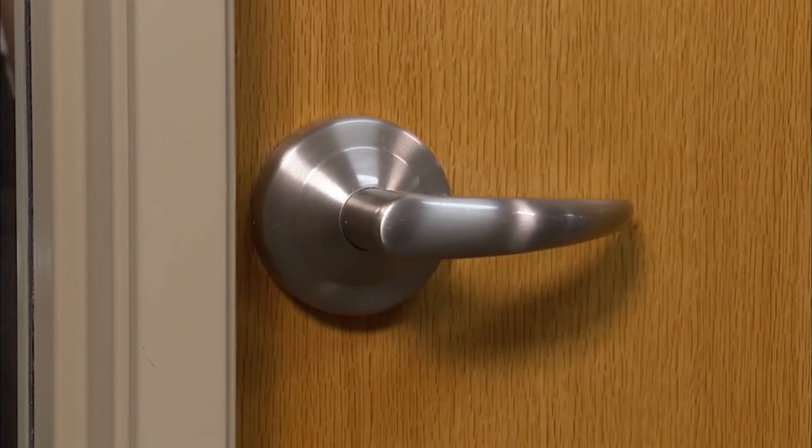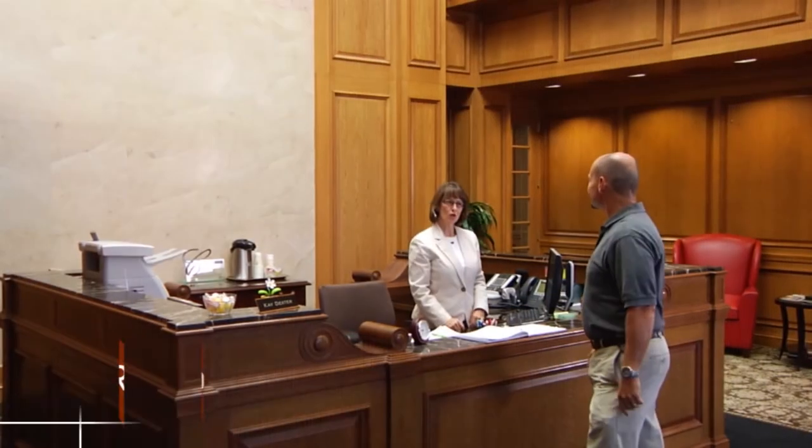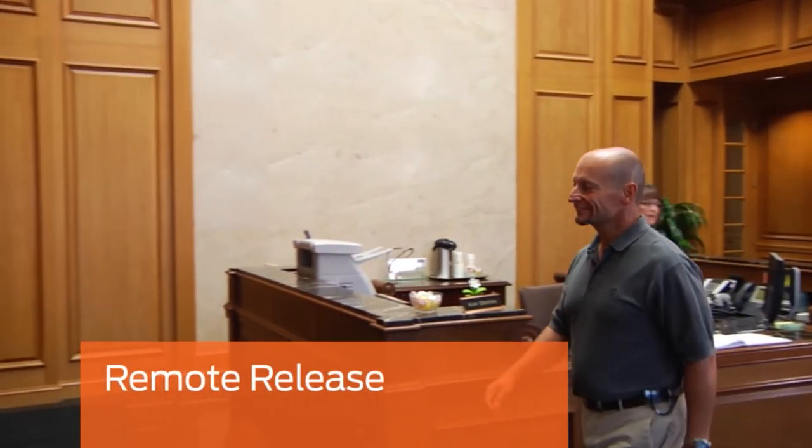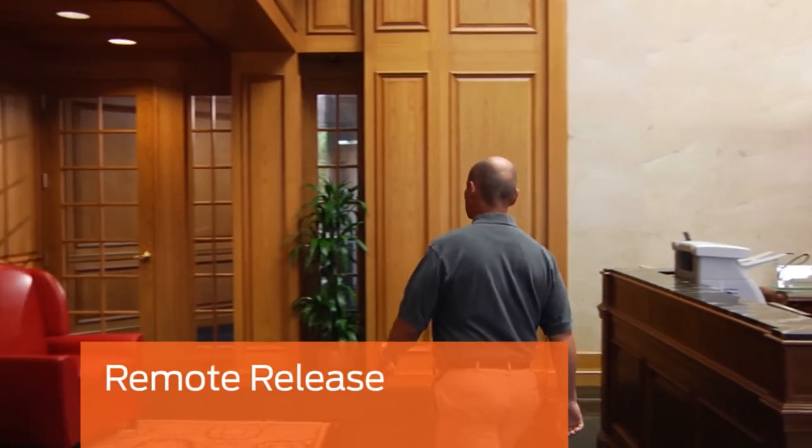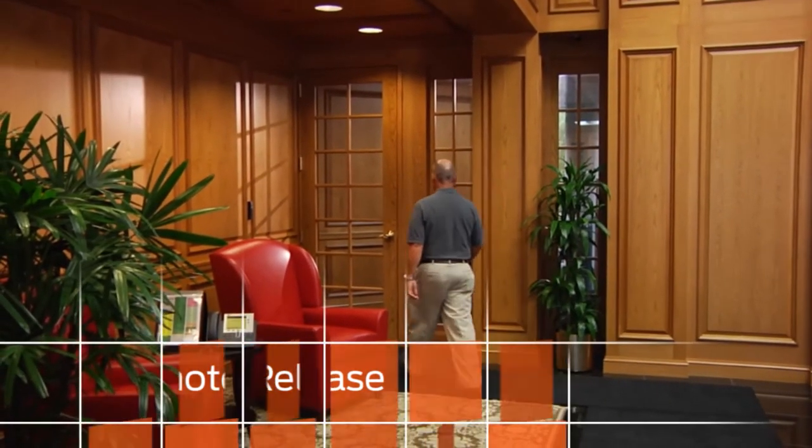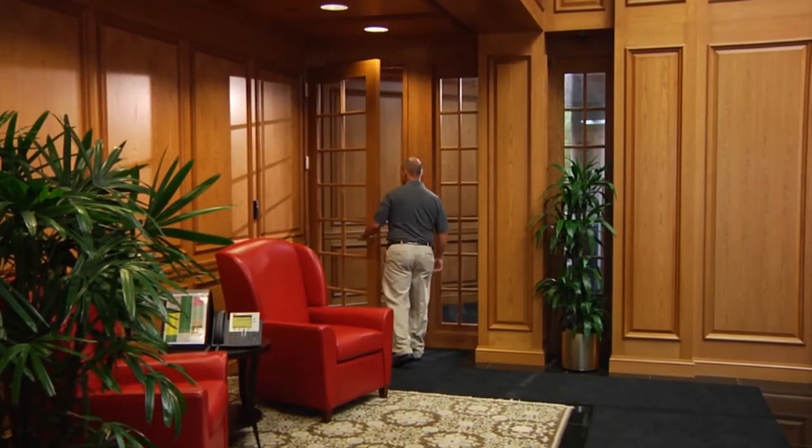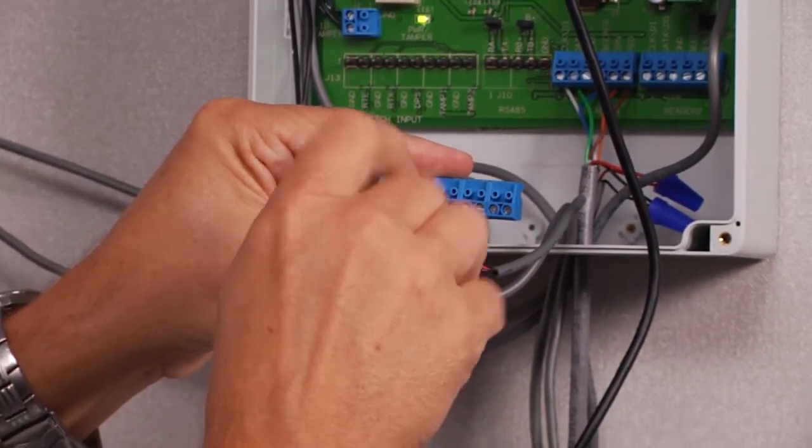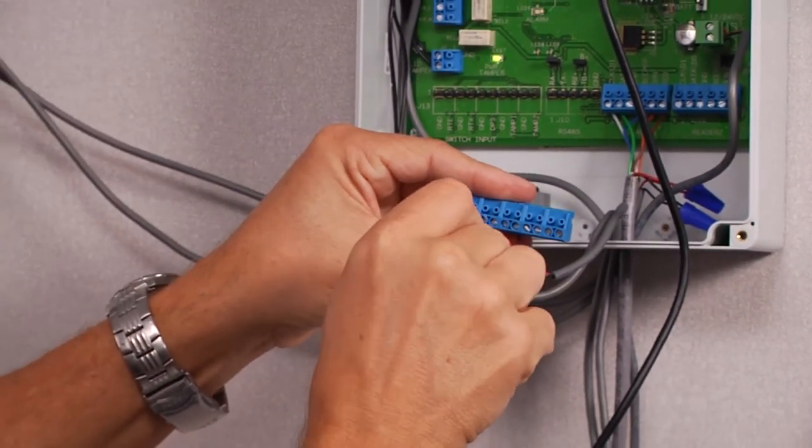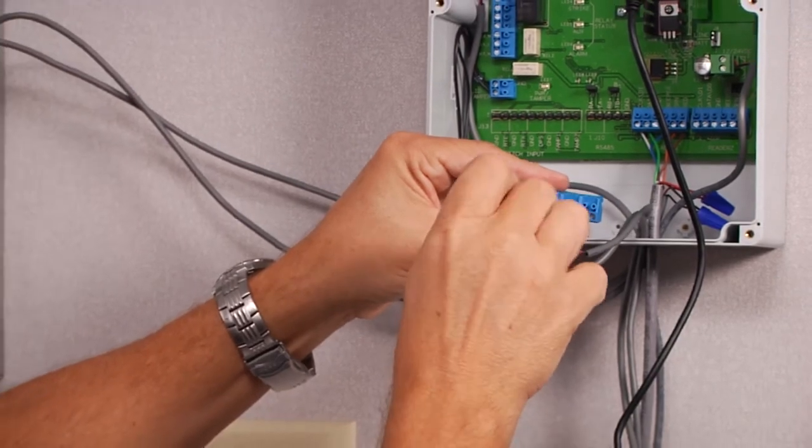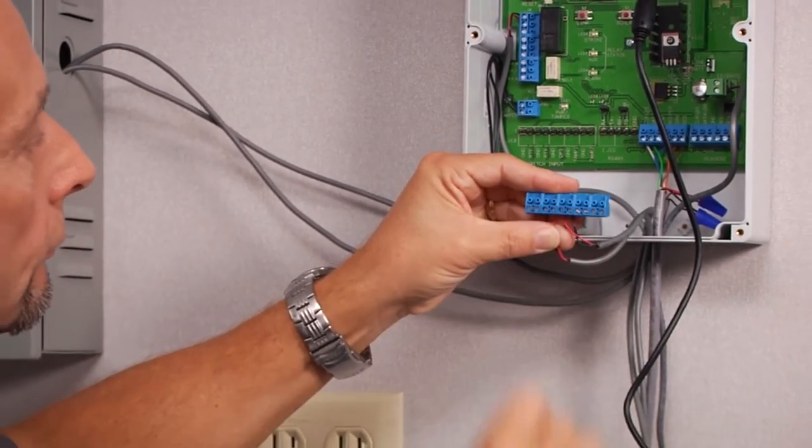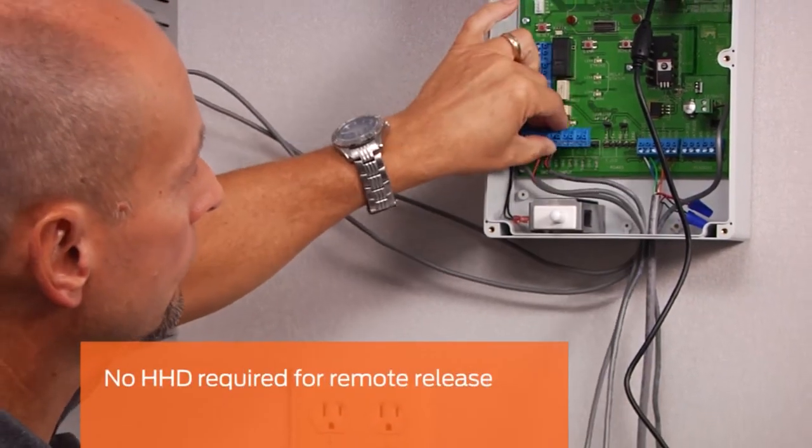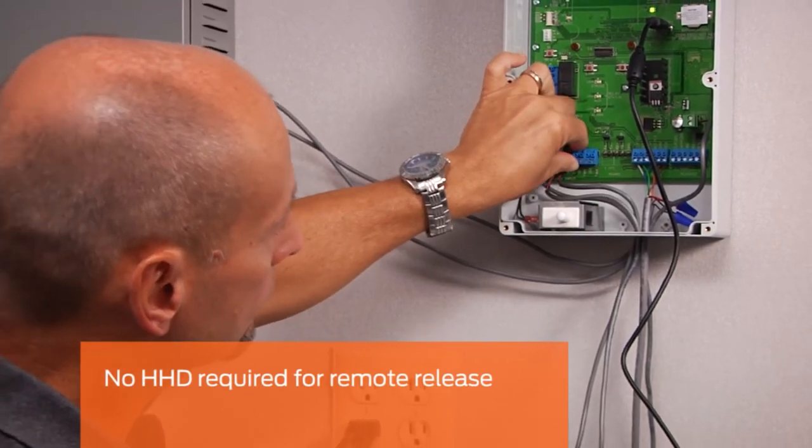The CT5000 can also be configured to provide remote release function, for example, to allow an office administrator to buzz in a visitor. To utilize this function, a push-button switch must be connected to the request to exit inputs on the CT5000. No HHD configuration is required for the push-button switch to unlock the door.